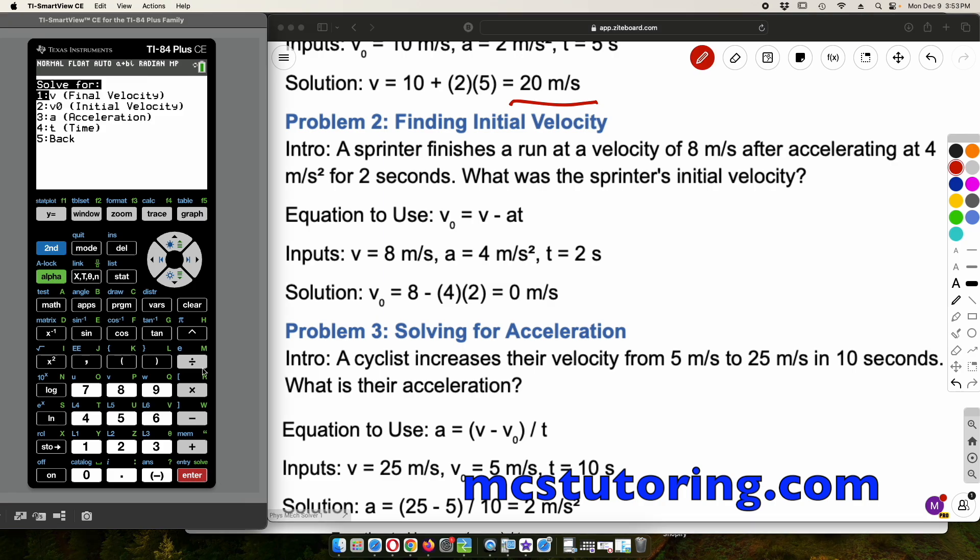And it is going to be this equation. Let's just see what we're going to solve for. A sprinter finishes a run at velocity of 8 meters per second. So that's V or VF, as it might be in some textbooks. After accelerating at 4 meters per second squared for 2 seconds. So the A is 4, and then the T is 2 for 2 seconds. What's the sprinter's initial velocity? That would be called V sub 0. So what we want to solve for is V sub 0, which is great. It's option 2 here.